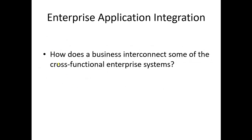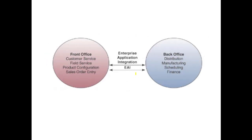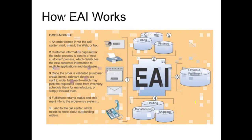EAI, enterprise application integration, addresses how a business interconnects cross-functional enterprise systems. EAI software connects cross-functional systems and serves as middleware to provide data conversion, communication between systems, and access to system interfaces. The model of EAI shows the front office — customer service, field service, product configuration, sales and order entry — with two-way communication going to the back office — distribution, manufacturing, scheduling and finance.